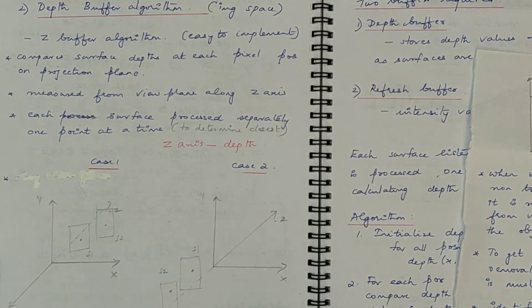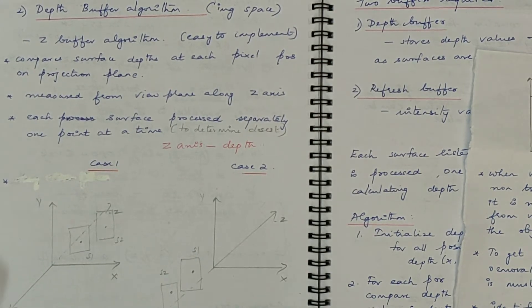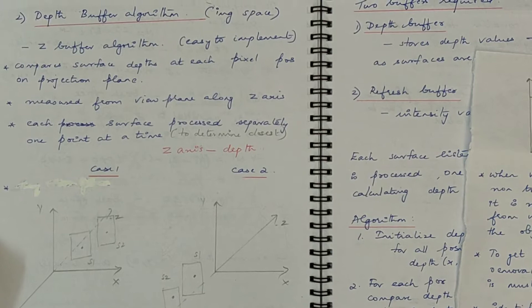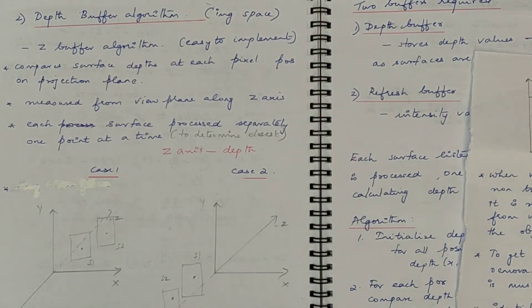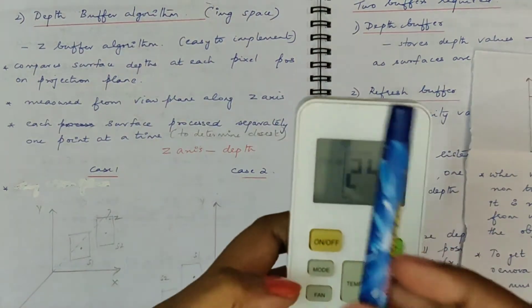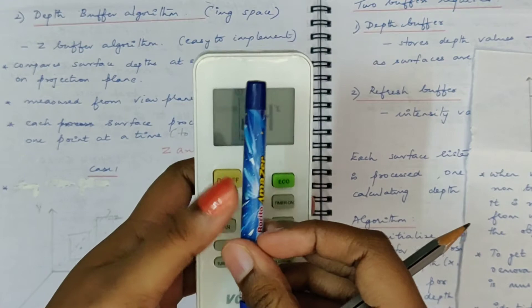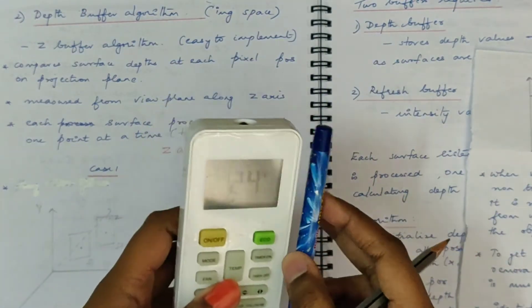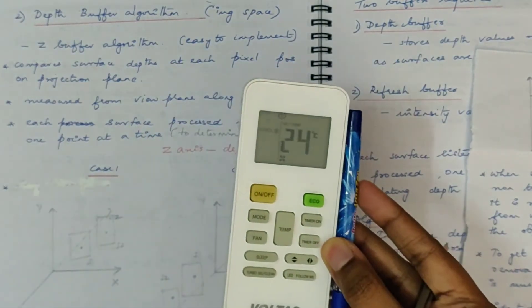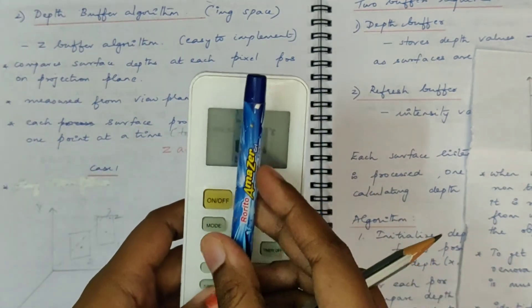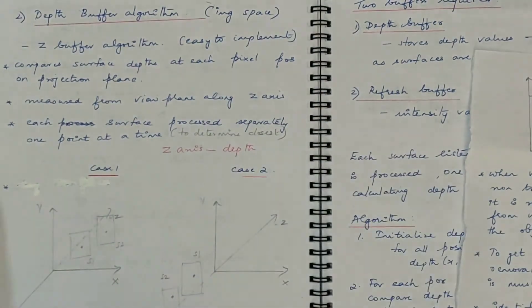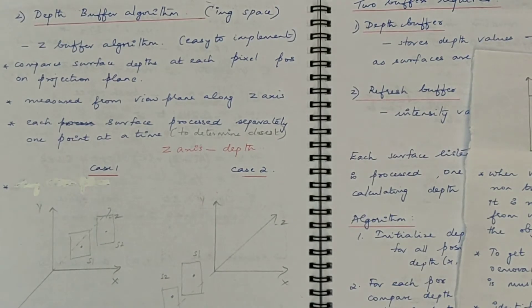The back-face detection algorithm we have seen — one of the major drawbacks for that algorithm was: if you have overlapping of objects, you cannot use that algorithm for eliminating the hidden surfaces. If you have overlapping of objects in this way, then back-face detection doesn't work fine. But the depth buffer algorithm we are going to see today works fine even if you have overlapping. Let's see how this algorithm works.